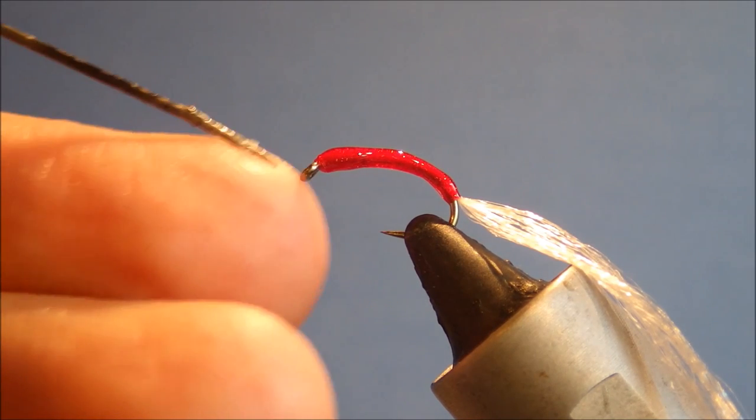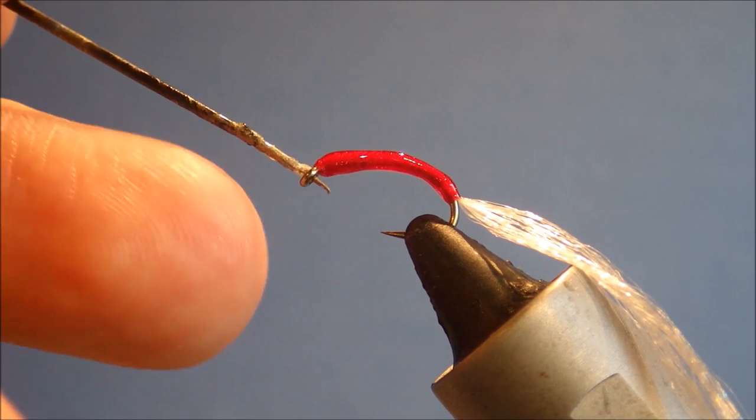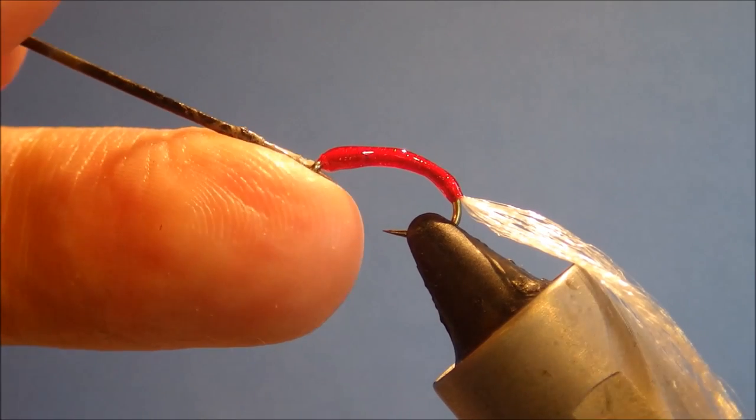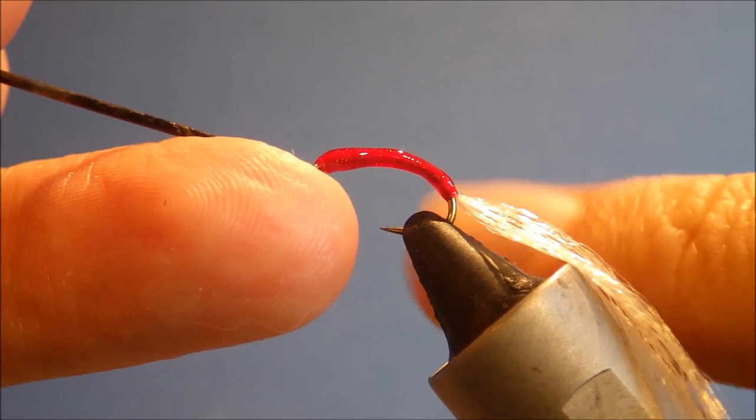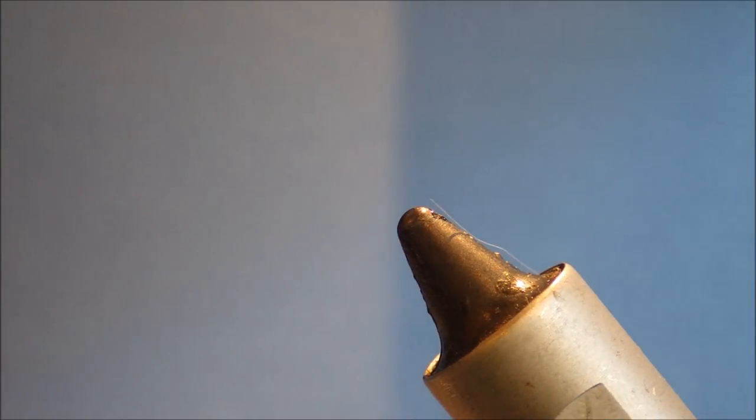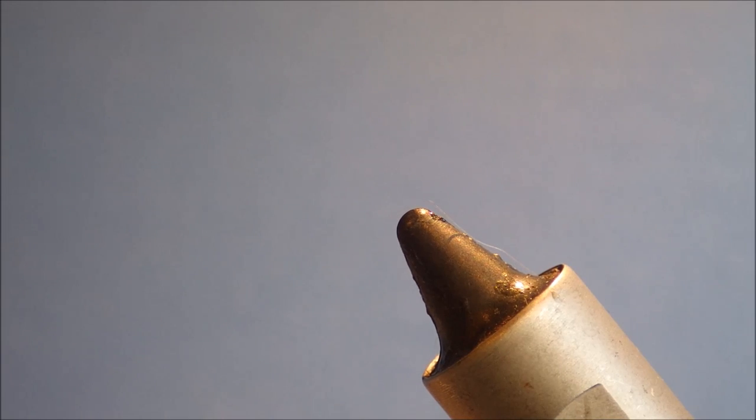To remove it from the vise, same as we did with the last fly, any fully varnished fly, I always just put my bodkin into the eye of the hook, trap it against my finger, release the vise, and then you can take it away. Stick it in a piece of foam, a drying wheel if you have one, and let it sit and dry.